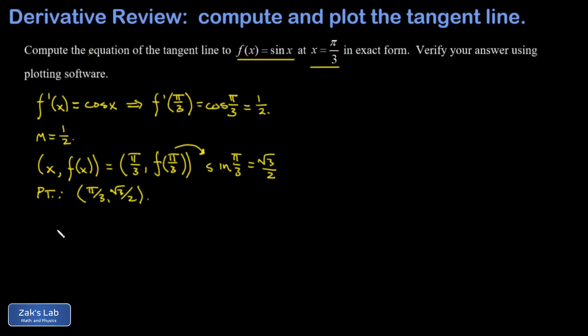Then we plug this into the point-slope formula. We have y minus our known y-coordinate of the point on the line is equal to m. That's 1 half times x minus the known x-coordinate of the point on the line. And we can solve for y, and we'll have this in slope-intercept form. I'm going to go ahead and distribute the 1 half while I'm at it. So there's a 1 half x, and then a minus pi over 6, and then a plus root 3 over 2. And we've got the equation of the tangent line.